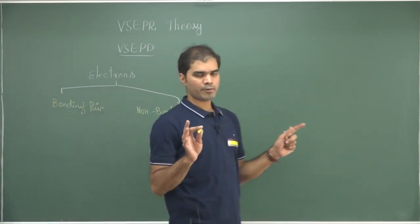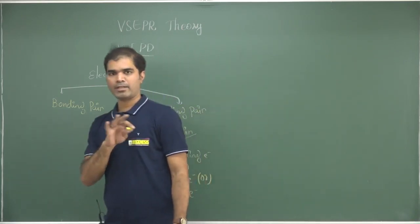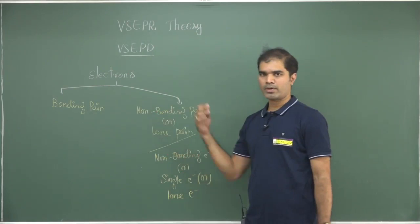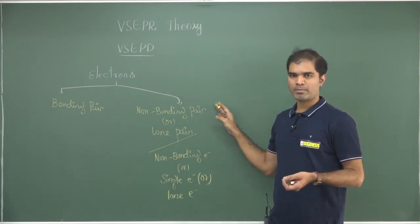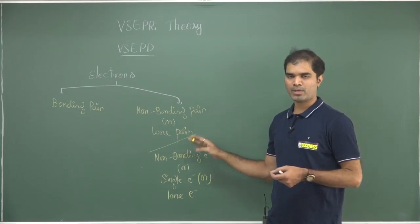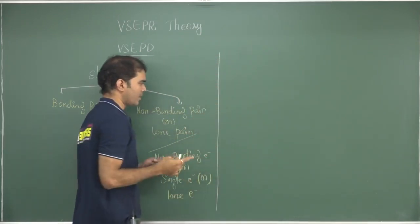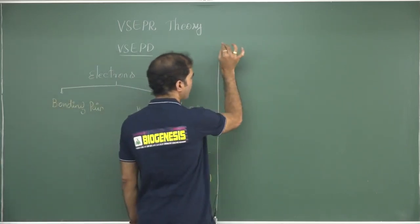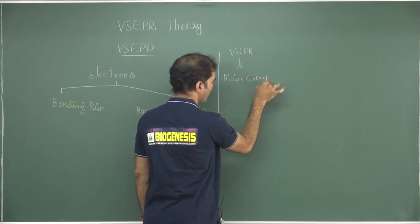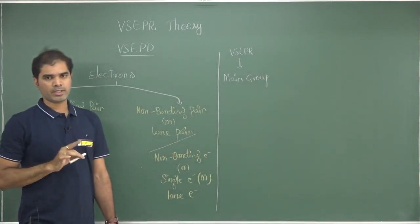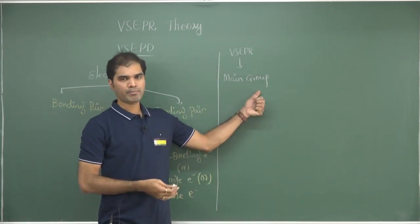So we have classified the electrons around a central atom into bonding pairs, lone pairs, and lone electrons. The next important part is to understand how these pairs of electrons interact with one another. VSEPR theory concentrates on molecules from the main group, not transition elements — though at an advanced level, transition metal complexes are also considered. In the beginning, it was applicable only for main group elements.